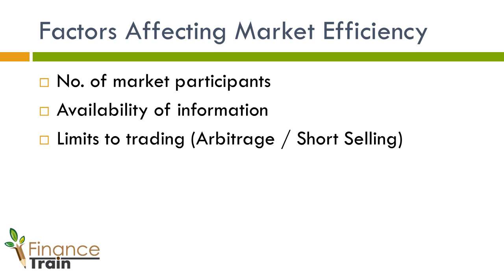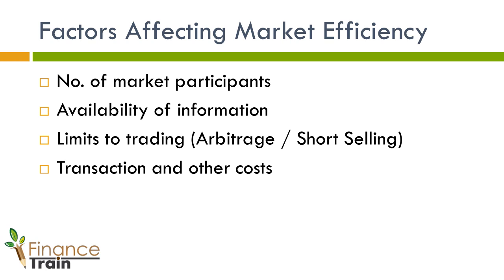Some markets may place restrictions on activities that impede market efficiency. Arbitrage is one such activity. Arbitrage involves taking advantage of price differences between markets — an arbitrageur will buy a security in a market where the price is low and sell it in the market where the price is high to make a risk-free profit. Arbitraging helps in price discovery and makes the markets more efficient. Some markets restrict short sales, which restricts arbitrage trading and affects market efficiency. The last factor affecting market efficiency is transaction costs and other costs associated with trading and analysis. As long as these costs are high, the markets will be inefficient.